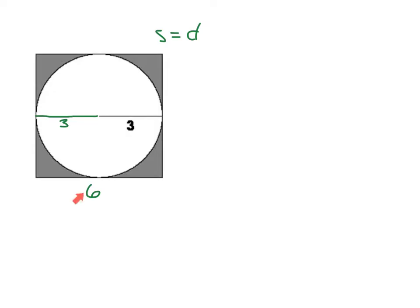And if this side of the square is 6, then this one is also 6. So now I have everything that I need to find my area.